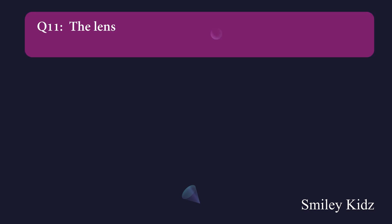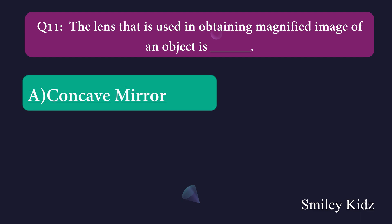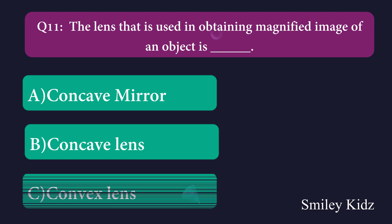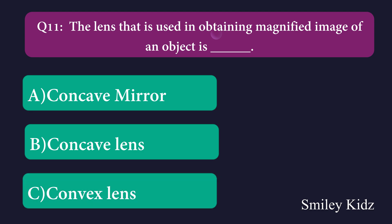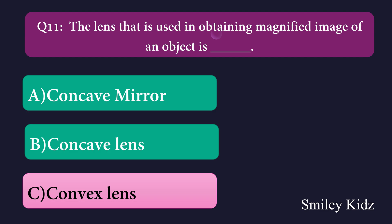Question number eleven: The lens that is used in obtaining a magnified image of an object is dash. Option A: concave mirror, Option B: concave lens, Option C: convex lens. The right answer is convex lens. The lens used in obtaining a magnified image of an object is convex lens.